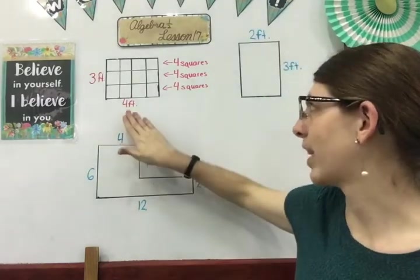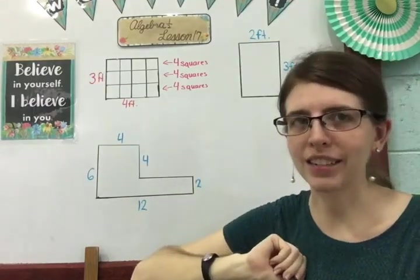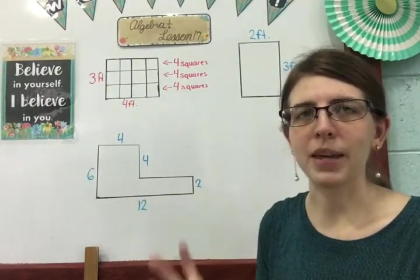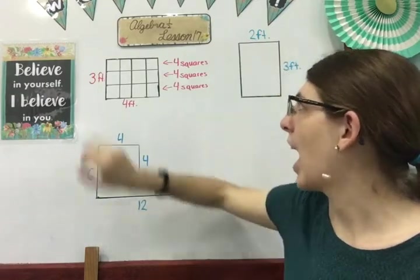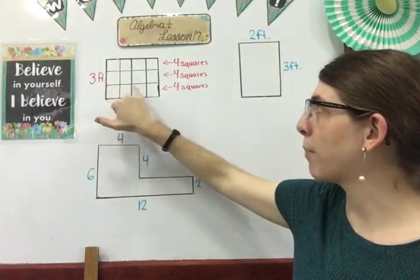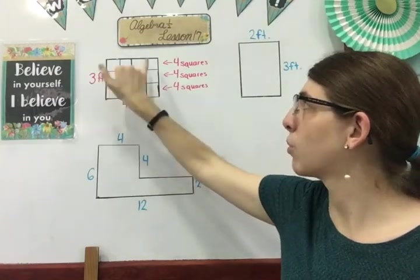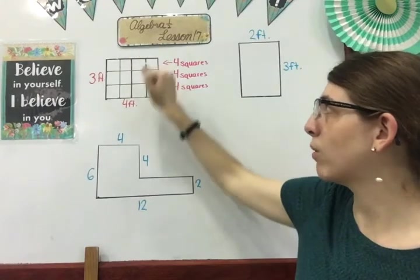Let's say I have this rectangle here that we're going to say it's 3 feet by 4 feet. If I were to divide it up into perfect squares, I would have 3 perfect squares going down, 4 perfect squares going across.